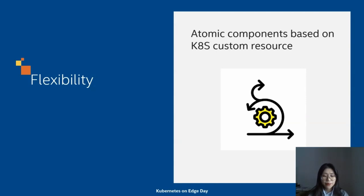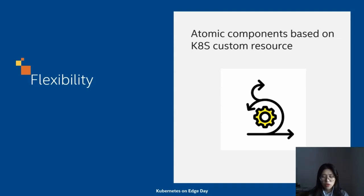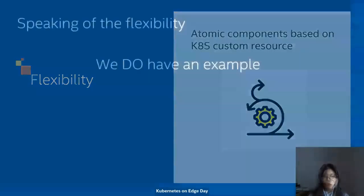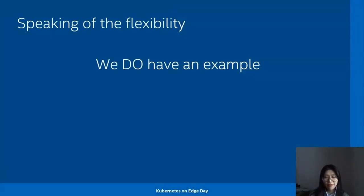Third, flexibility: all three components are atomic. They can be used totally as an overall solution, or they can be used separately with other frameworks. This is mainly because they are based on Kubernetes custom resources — any framework that can adopt this mechanism is able to use the CNF or the CRD controller separately. Speaking of flexibility, we do have an example. Let me hand over to Qiang for the demo.